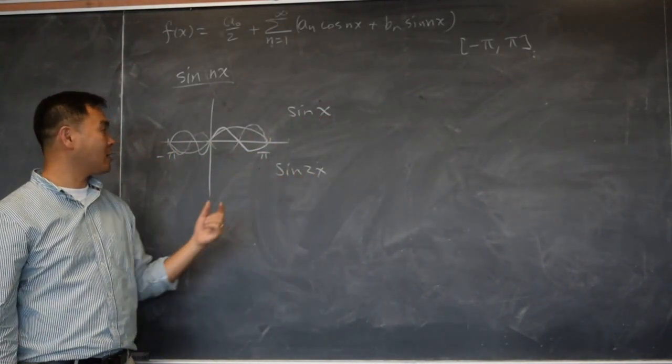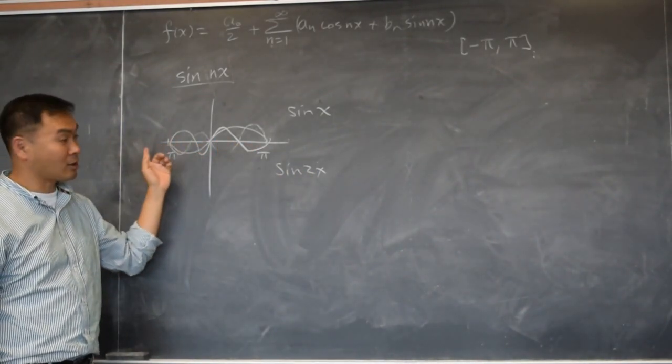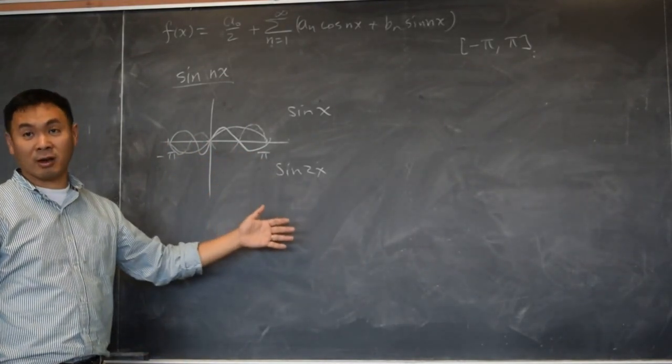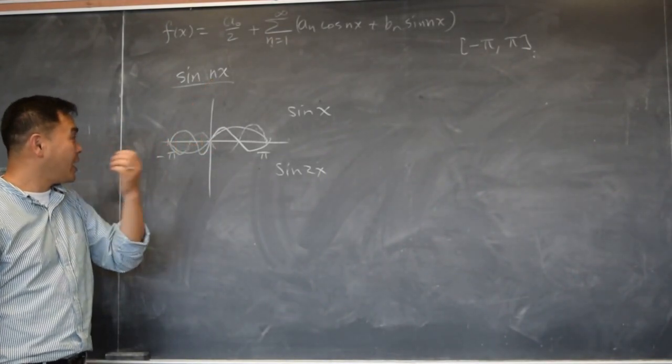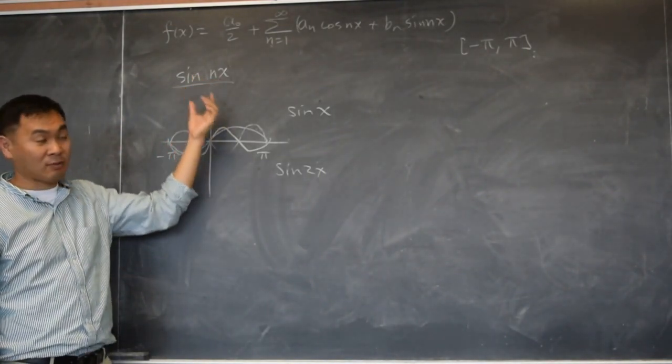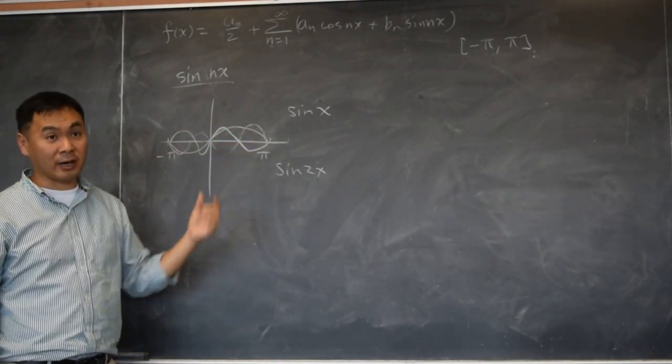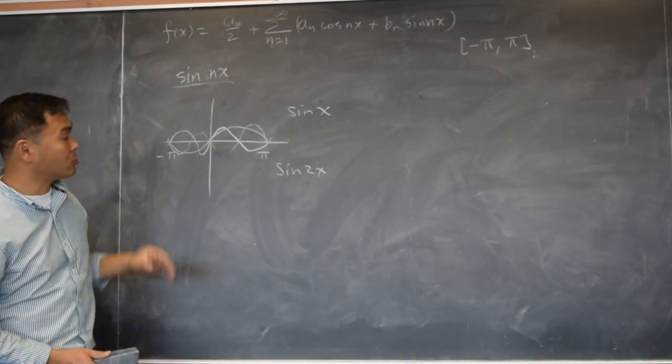If you drew the sine 2x, there are two periods of sine 2x that goes into negative pi to pi. And then so on and so on. Sine 3x, sine 4x. Sine nx will have n copies of its graph, one period inside this negative pi to pi. And cosine nx also.